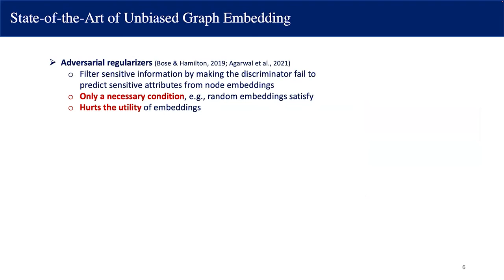There is a large body of literature on unbiased graph embedding. Arguably, the most popular way is adding adversarial regularizers. The basic idea is to filter sensitive information by making a discriminator fail to predict sensitive attributes from the node embeddings. However, such regularization is only a necessary condition. For example, random embeddings will easily satisfy this condition. Because of this, these methods usually hurt the utility of the embeddings.